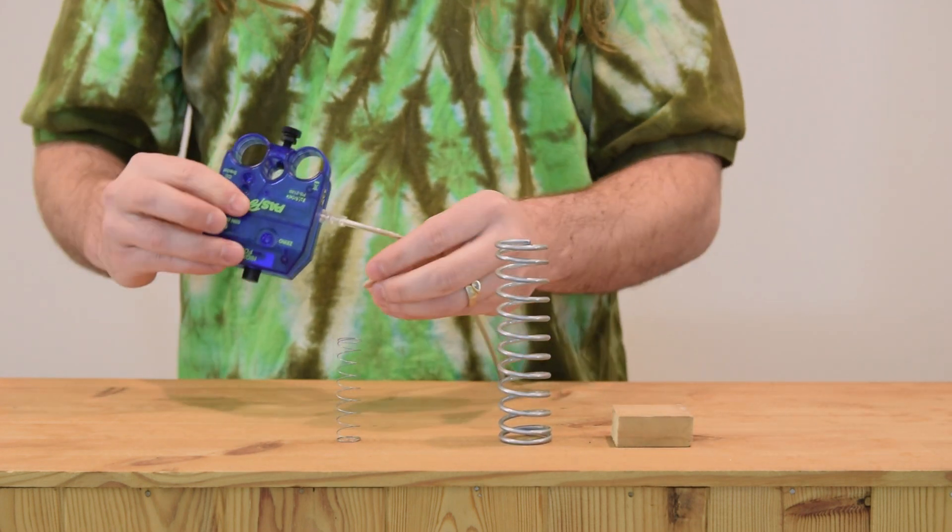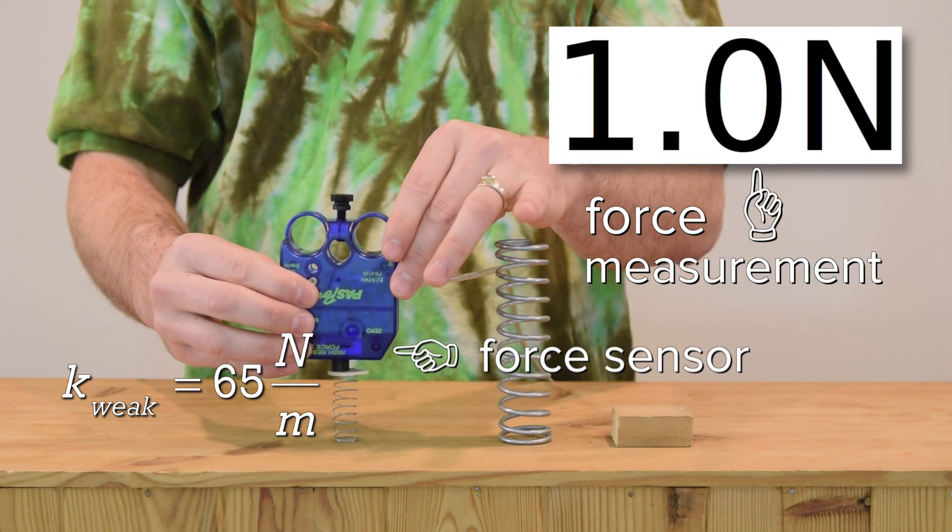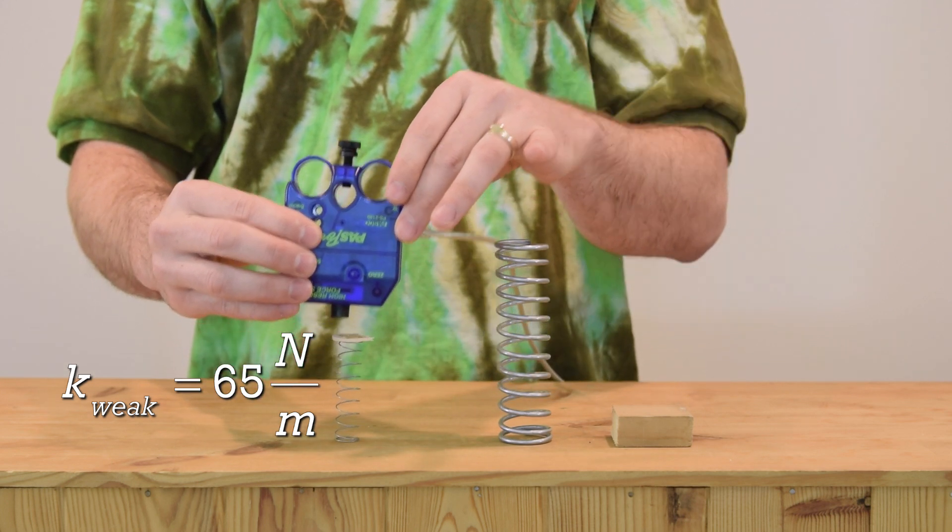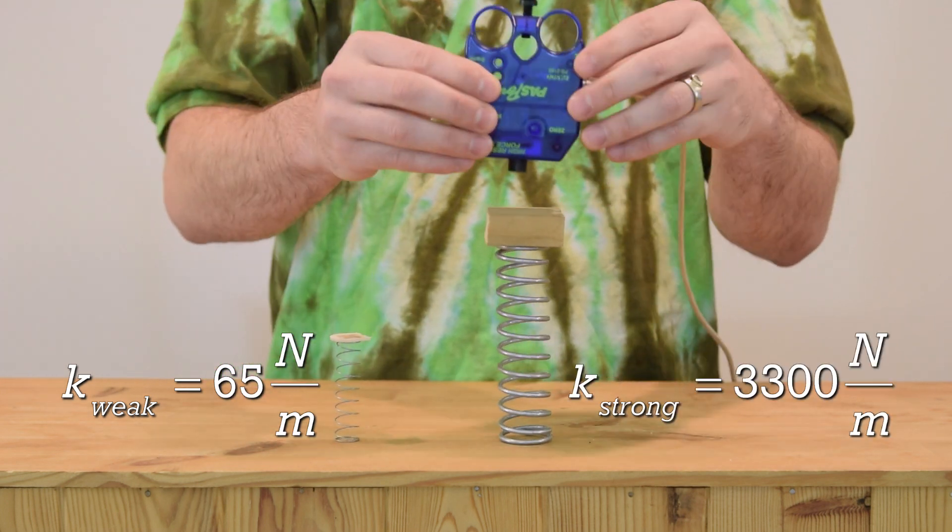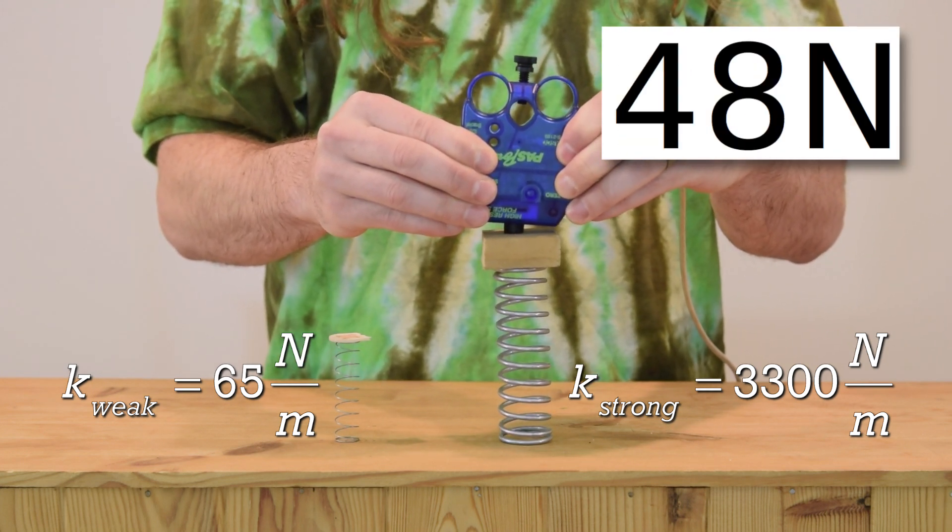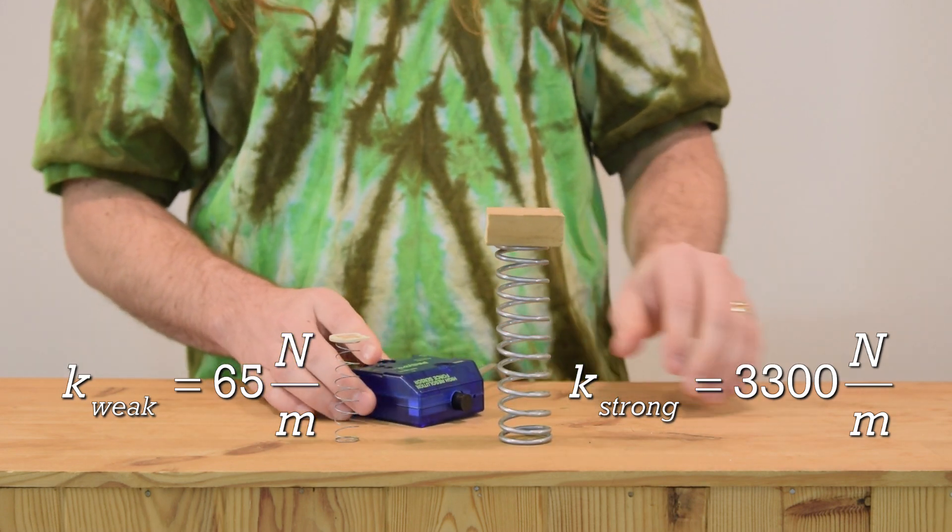For example, this weak spring has a small spring constant of about 65 newtons per meter because it takes very little force to compress it. And this strong spring requires a lot more force to compress it because it has a large spring constant of about 3,300 newtons per meter.